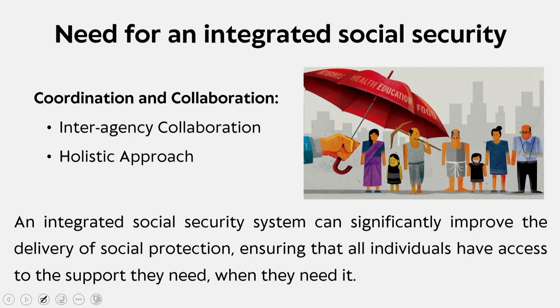We also have to look into coordination and collaboration. Specifically, when we have a lot of schemes running, there should be inter-agency collaboration that categorically promotes coordination between different government agencies and departments. We also have to act on a holistic approach which will address social issues holistically rather than through isolated programs. An integrated social security system can significantly improve the delivery of social protection, ensuring that all individuals have access to the support they need when they need it.